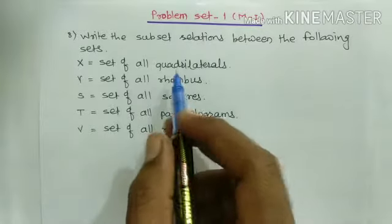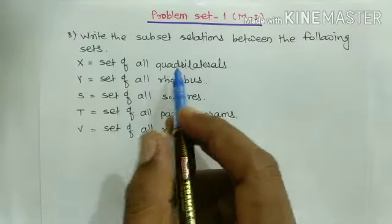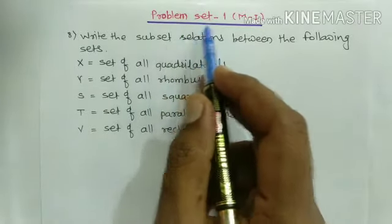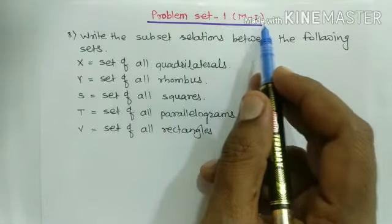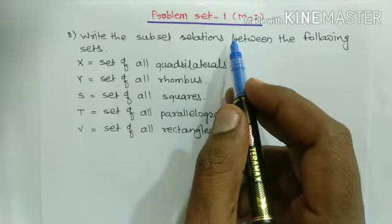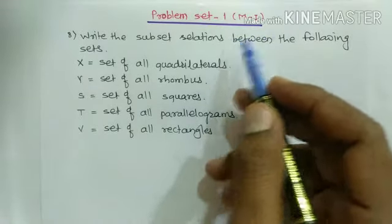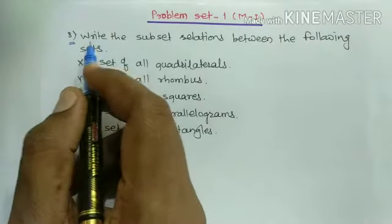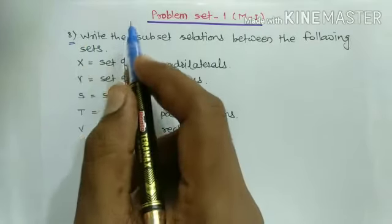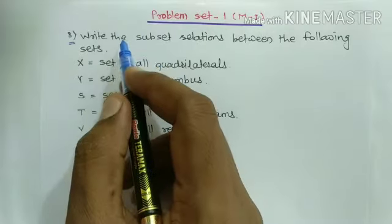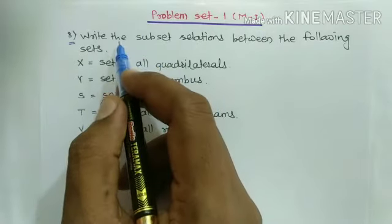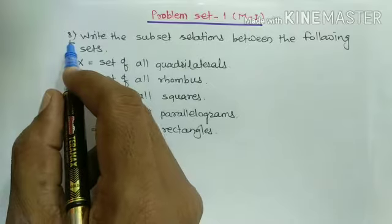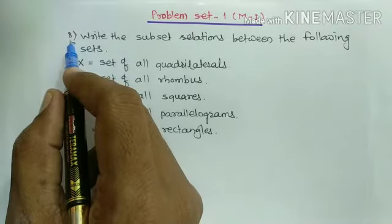Hello friends. In this video we are going to solve the remaining examples in Problem Set 1 of Maths Paper 1, that is from the chapter of Sets. We have already solved the first seven examples in the previous videos. In this video we are going to solve the examples from eight onwards.